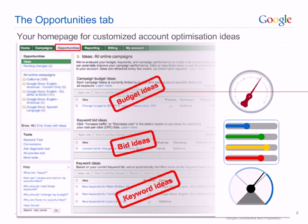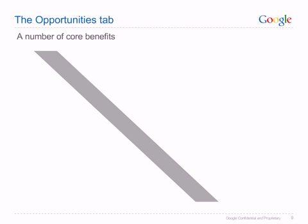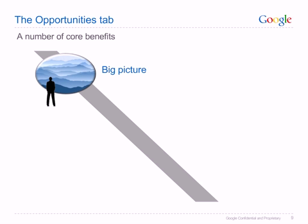Depending on how your account is going, you may only see one type of idea, you may see none, or you may see all three. Before we delve into the details of the tab, let's talk about some benefits. First, the opportunities tab helps you understand the big picture of what's going on in your account. Other AdWords tools may focus on a certain campaign or ad group at a time. The opportunities tab helps you get a bird's eye view and provides you with keyword, bid and budget optimization ideas across your entire account.